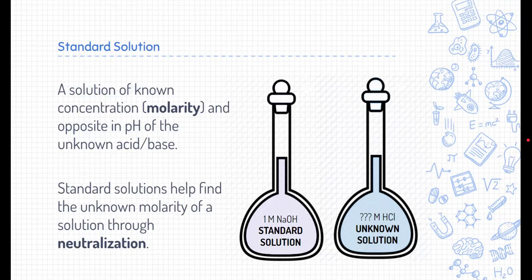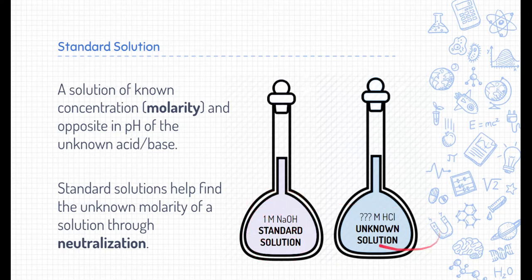Let's start with a standard solution. A standard solution is a solution where we do know the concentration or molarity. It's always opposite in pH of our unknown. So here our standard solution is a one molar sodium hydroxide solution — that's a base — and we use it to compare and figure out what our unknown acid solution's molarity is. Standard solutions help us find our unknown molarity of the opposite solution through the process of neutralization.